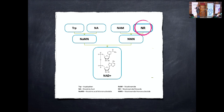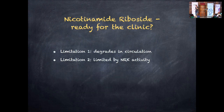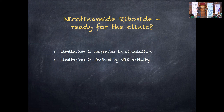Nicotinamide riboside has some unique properties, and in metabolic disease it probably gives advantages versus the other precursors. However, if you're aware of the NR situation in the clinic, it didn't meet expectations from preclinical models. There are two reasons. First — described in 2016 — NR is heavily degraded in circulation; even given intravenously, in less than 12 hours it's completely destroyed. Work from Joshua Rabinowitz and others showed it's also heavily degraded in the GI tract, so NR is really poorly bioavailable and degraded to nicotinamide, which as I showed may be impaired.